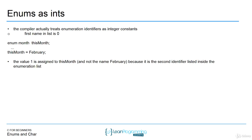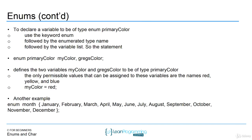In this case, February would be one because it's the second element in the list — the list starts at zero. So January would be zero, February would be one, March would be two, and so forth. This is important because you can then compare it against an int as well as comparing against actual values like February.